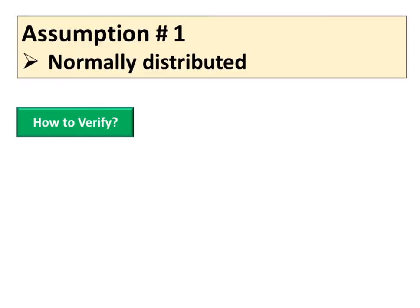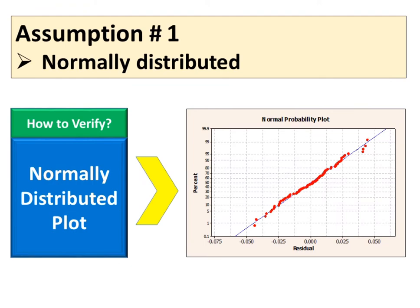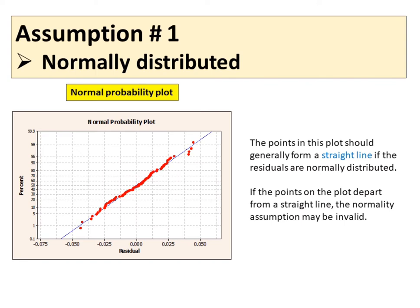Let's start with the first assumption of normally distributed. How to verify the assumption of normally distributed? A method of checking the normality assumption is to construct a normal probability plot of the residuals.